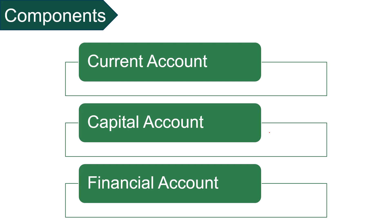The last one is financial account. Financial account records financial assets and liabilities. The surplus or deficit on account of current account, capital account and error or omission is financed through external assistance like loans, gross drawing from IMF, allocation of SDRs, and increase or decrease in reserves.